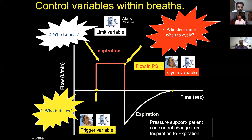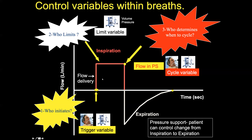The flow delivery in volume controlled ventilation is a square wave — the flow is very constant and it doesn't respond to the patient's requirement. So in a volume controlled breath, the flow pattern is fixed.